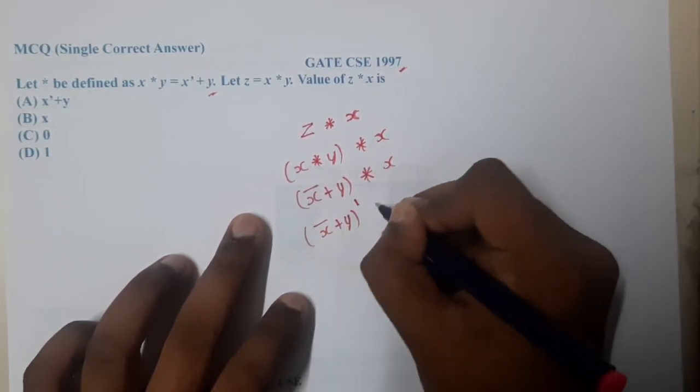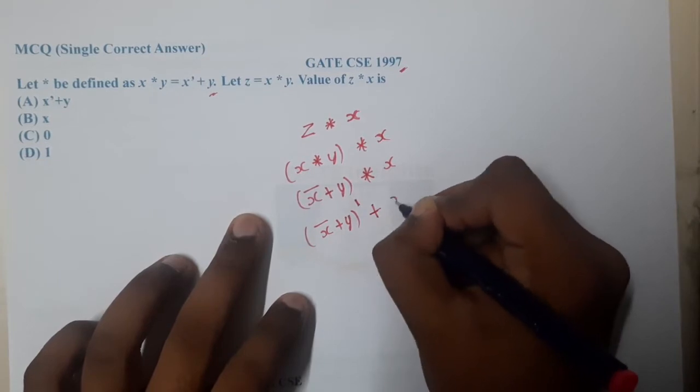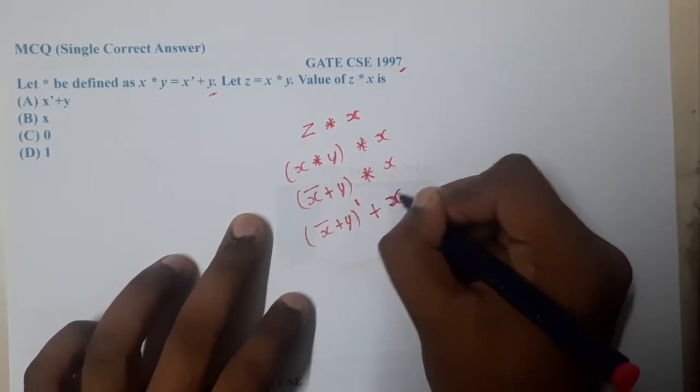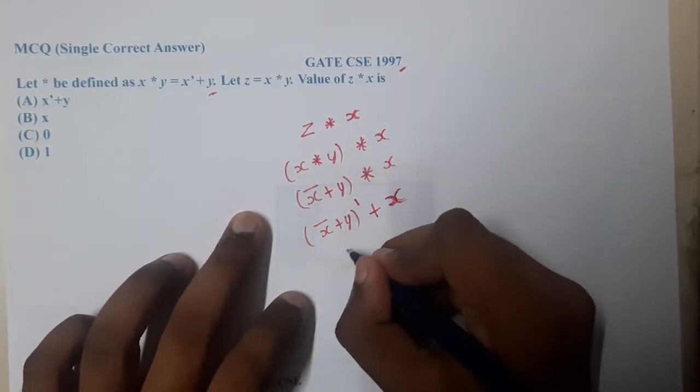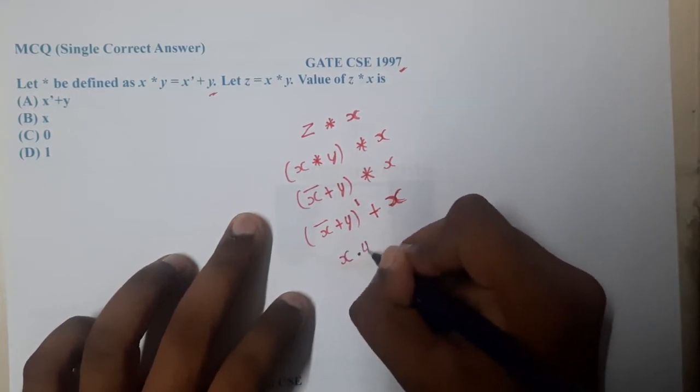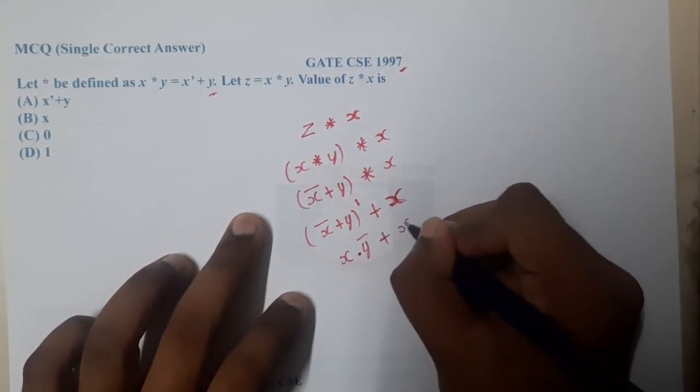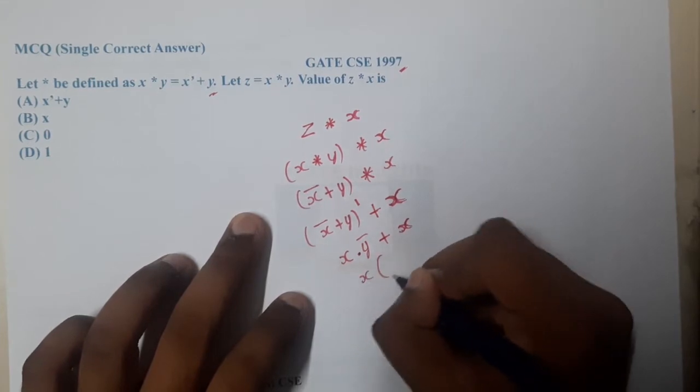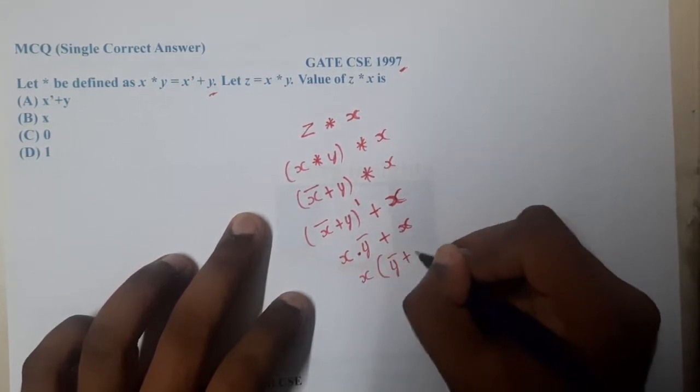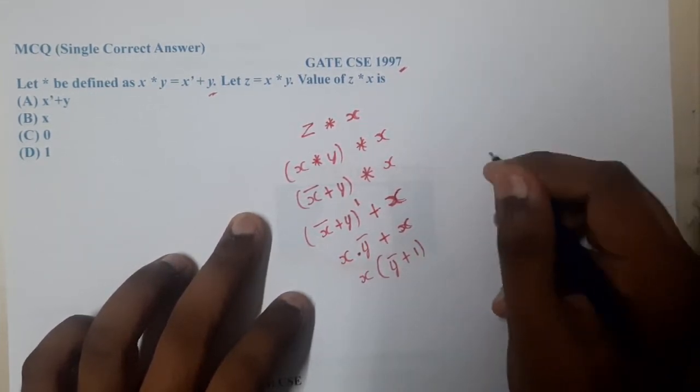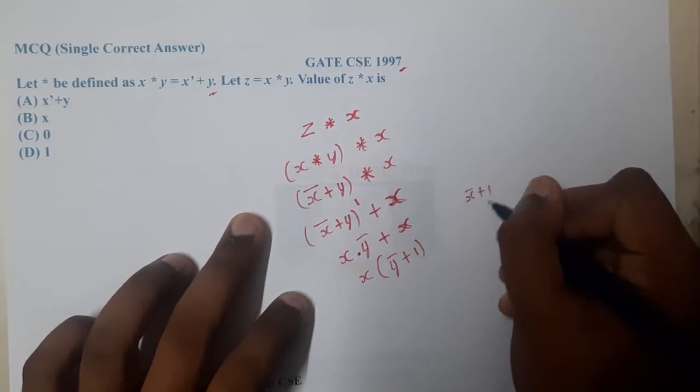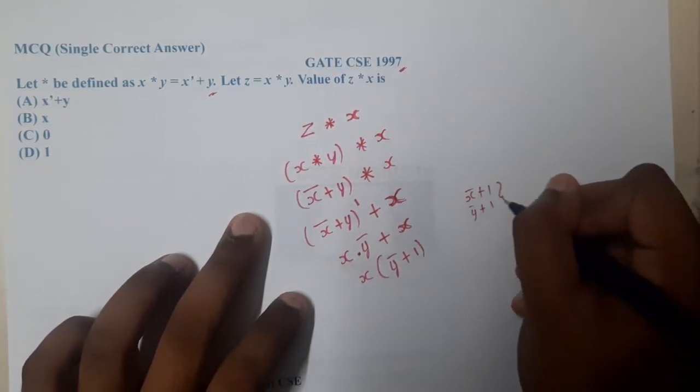Let us solve this inside part. Using De Morgan's law, this becomes x into y bar plus x. Here we can take x common: x times (y bar plus 1). Anything plus 1 equals 1, so this is nothing but x.